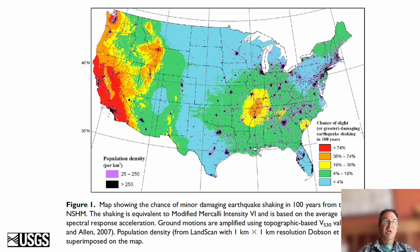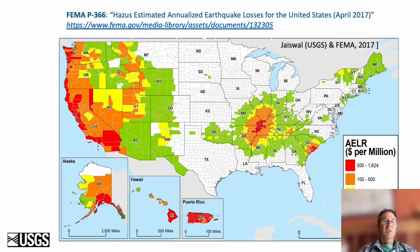We've overlaid shaking probability on a population map to get a first-order assessment of hazard based on population and shaking potential. That can be fed into Hazus, which is FEMA's tool for looking at loss impacts domestically. We've also developed FEMA 366, which is a long-term risk map in terms of annualized losses.